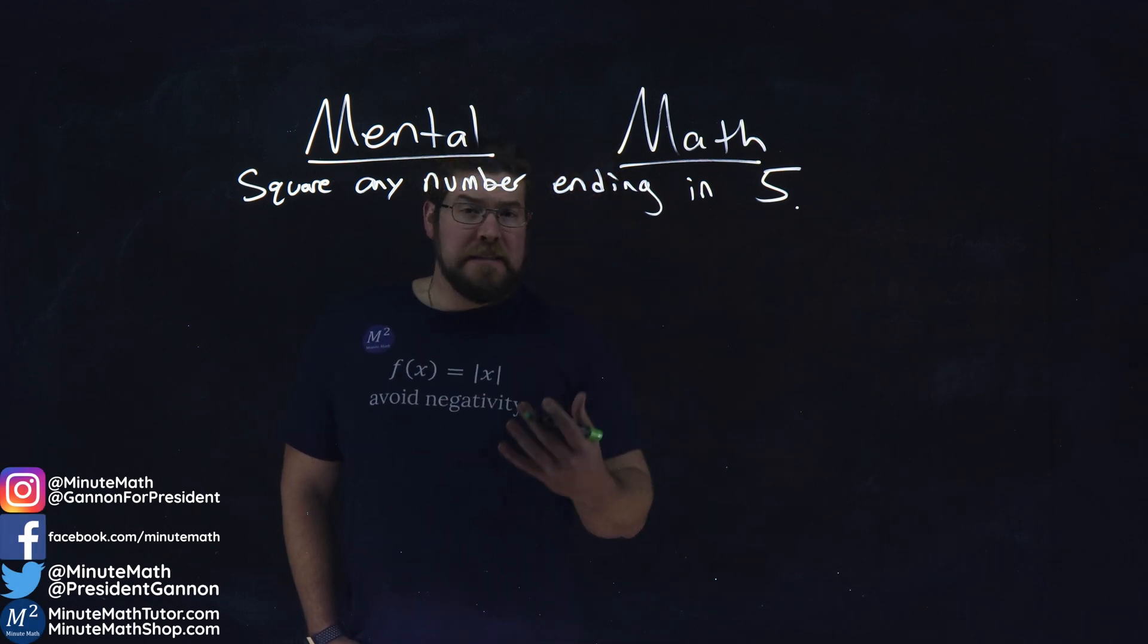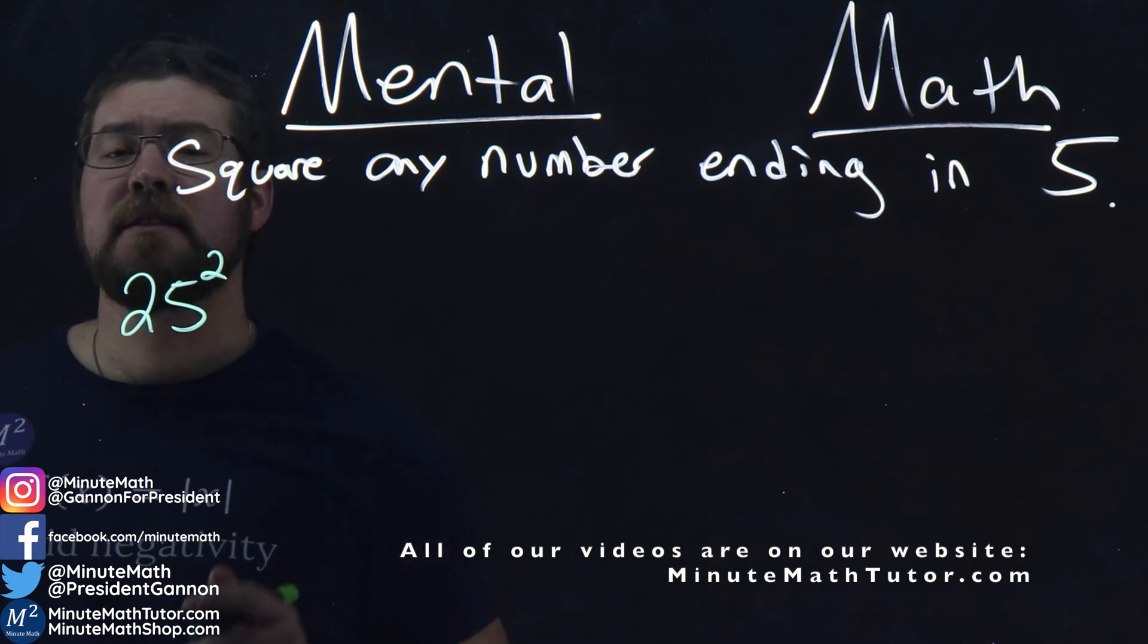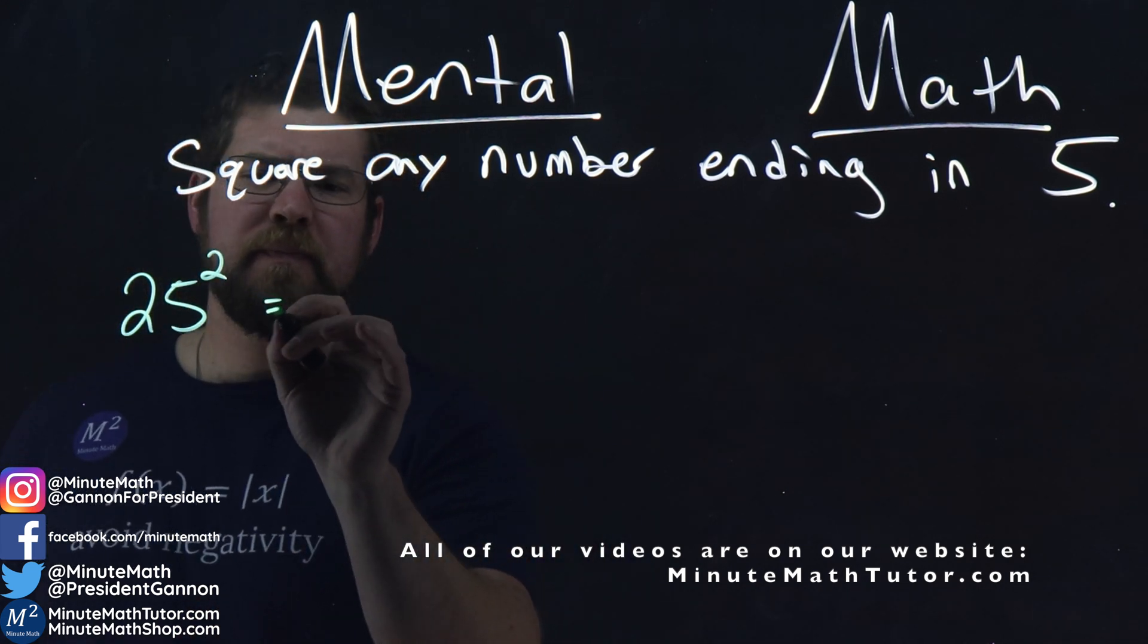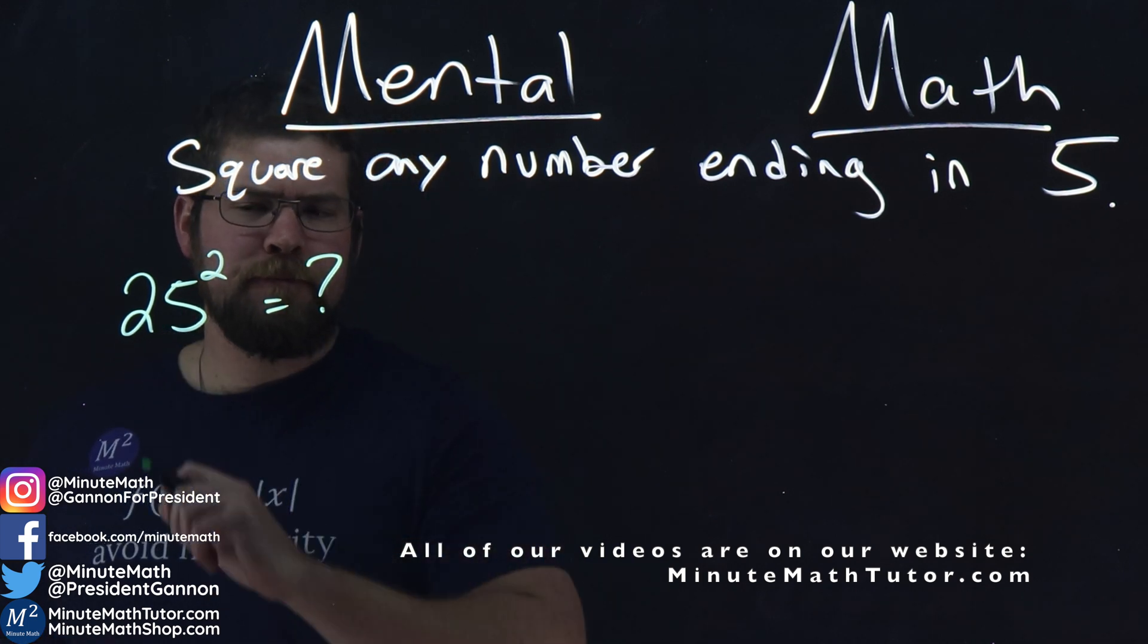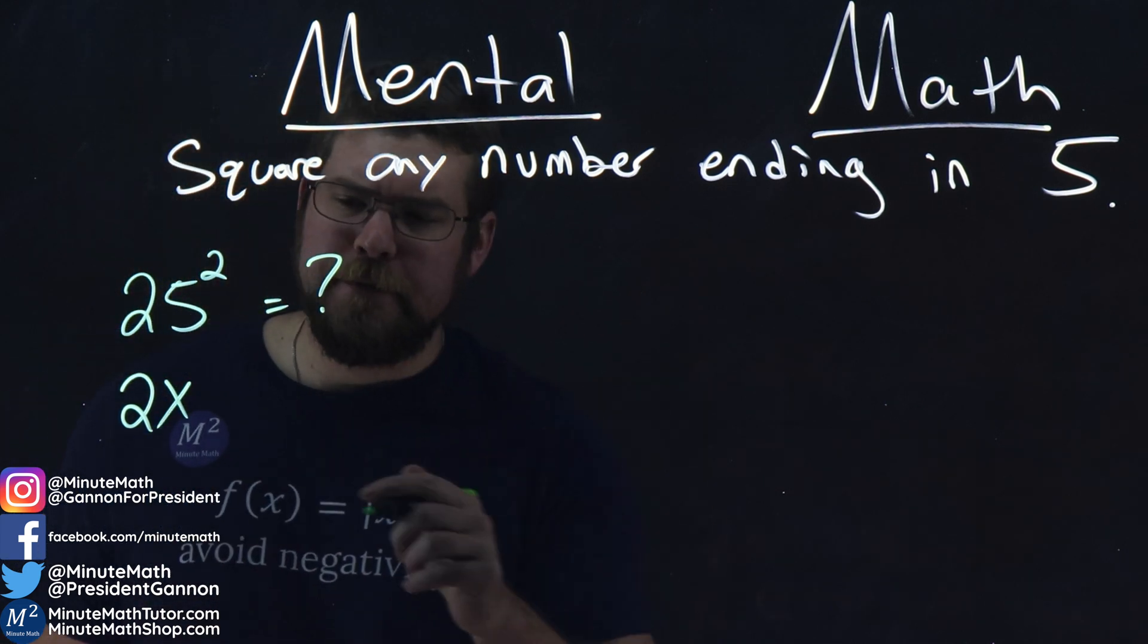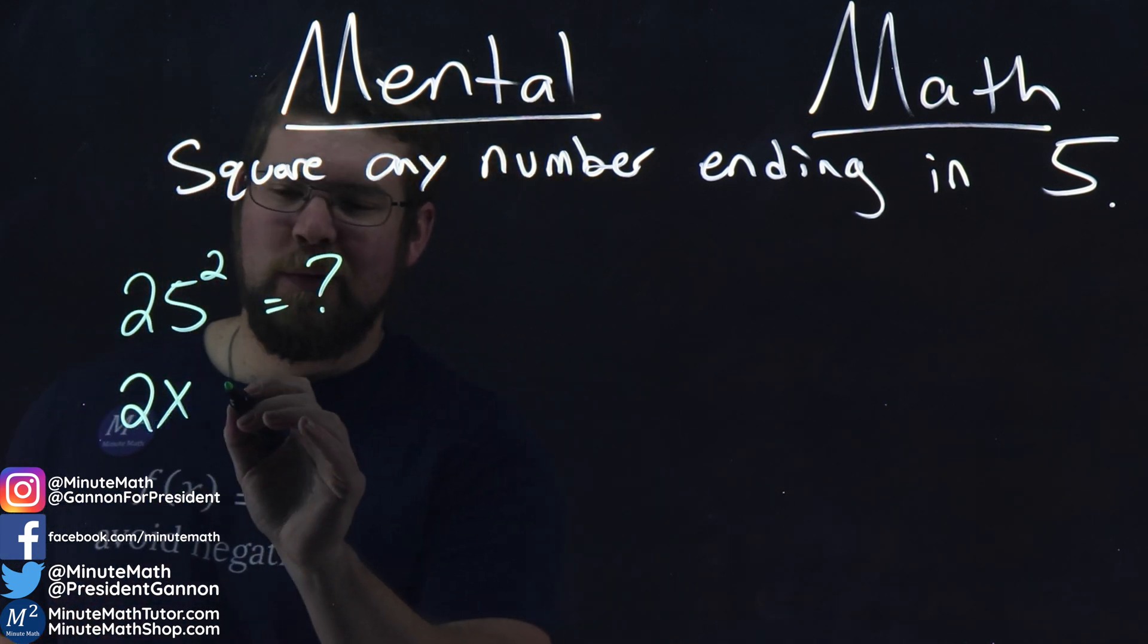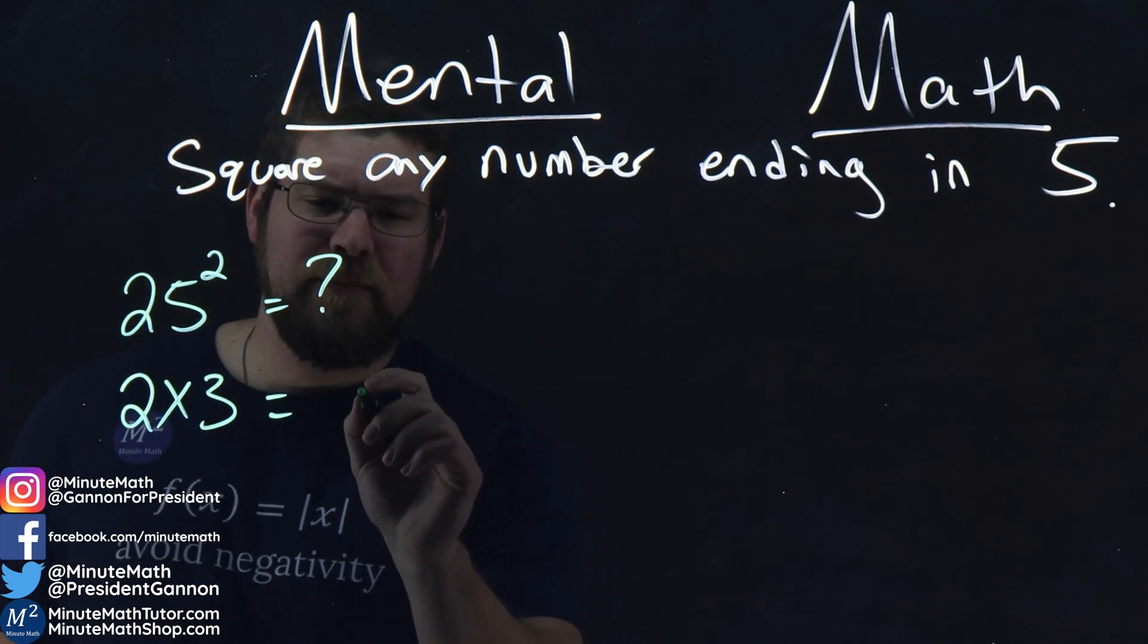So, first let's go through an example of 25 squared. What do we do? Well, first we take the first digit, or every digit before 5, and we take that and multiply the 2 times 1 plus it. So, 1 plus 2 is 3. From there, 2 times 3 is, easy, 6.